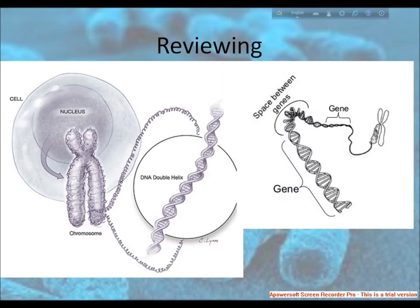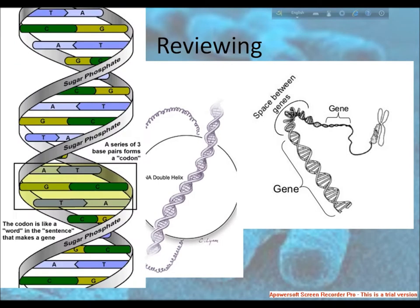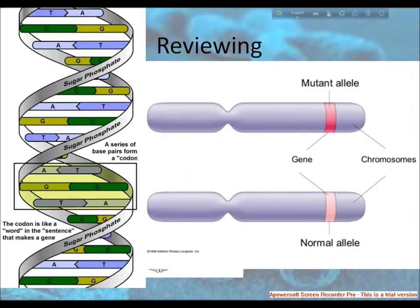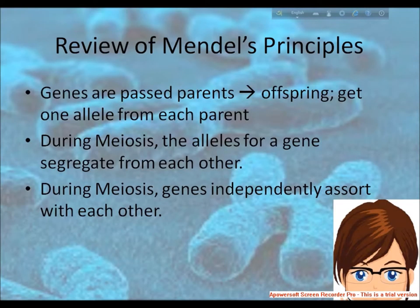This is the cell nucleus chromosome and DNA double helix. We know that the space between genes, and this is a mutant allele and normal allele genes on chromosomes, which are required in this section.